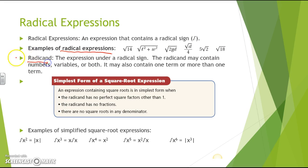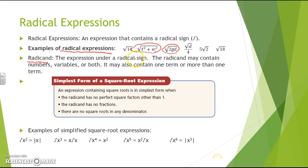A radicand is the actual square root sign. The radicand may contain numbers, variables, or both, and it may also contain one term or more than one term. Notice this radical expression has numbers, variables, and contains one term, where this radical expression has variables and exponents and contains two terms — two different situations.